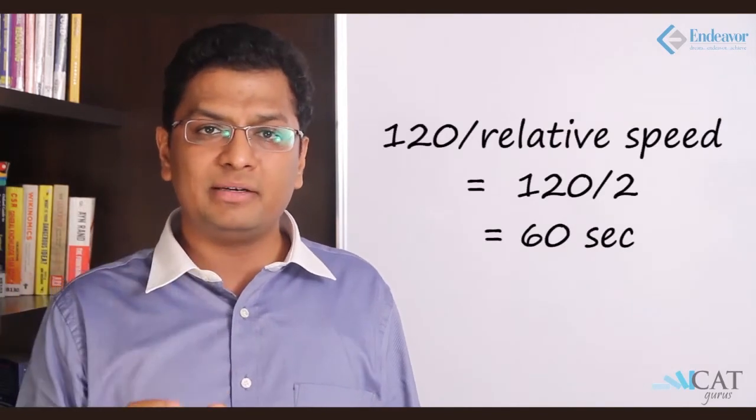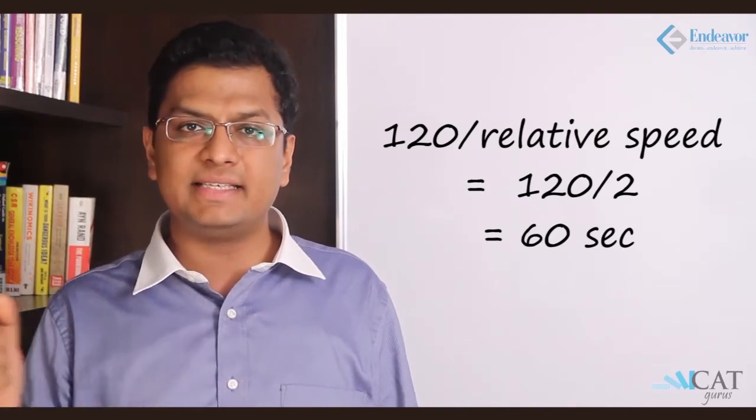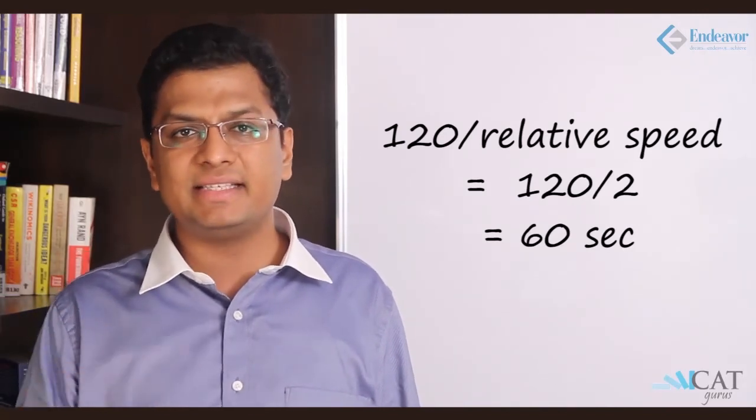So let us look at A and B. A and B, the relative speed is 5, 7. So it means that relative speed is 2 meter per second. So on a 120 meter track, 120 divided by 2 gives me 60 seconds. So A and B meet at every 60 seconds.